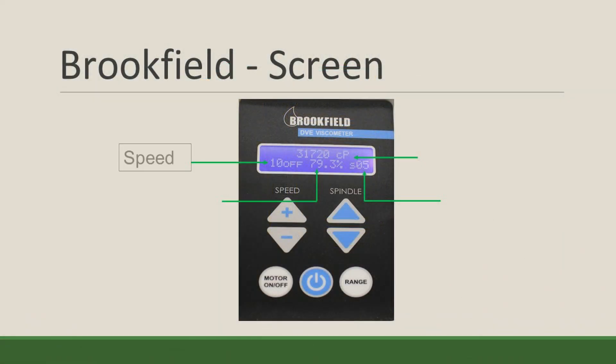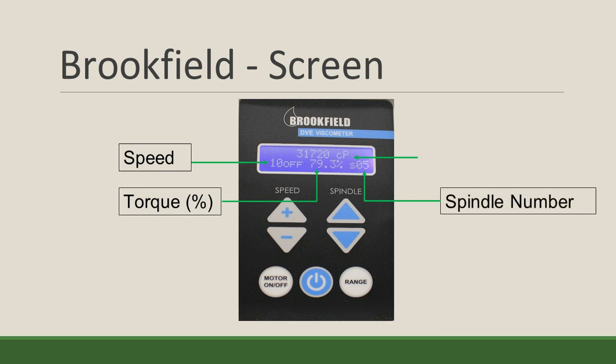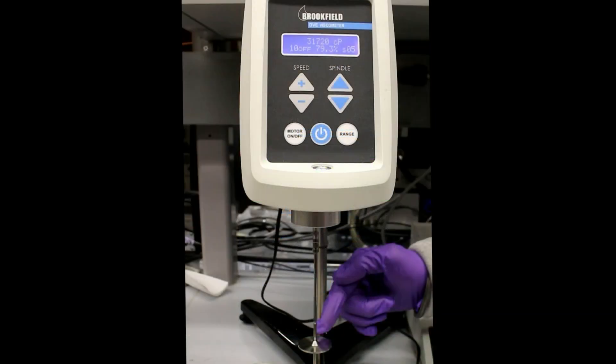On the screen you have the speed of the spindle which you can control, and the torque percent which should be between 10% and 100%, which helps determine if you have the right speed and spindle for your product. You also have the identity of the spindle you are using. On the top you have the viscosity reading in centipoise. The Brookfield is one of the most common methods to measure viscosity in quality control and quality assurance settings.